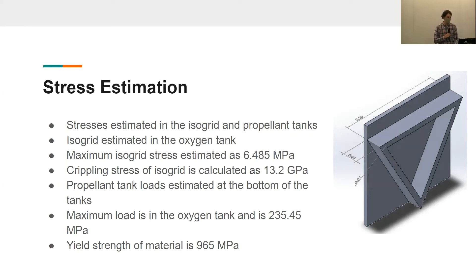The next thing we estimated was stress in the propellant tanks. We did that at the very bottom of the propellant tank because the force there is actually the pressure from the pressure vessel and the force of the acceleration of the mass of the propellant at 6 g's. The maximum stress for both of the propellant tanks is actually in the oxygen tank at 235 megapascals. This number and the stress estimated in the isogrid were both compared to the yield strength of the 301 stainless steel of 965 megapascals, and they are both well below that limit.